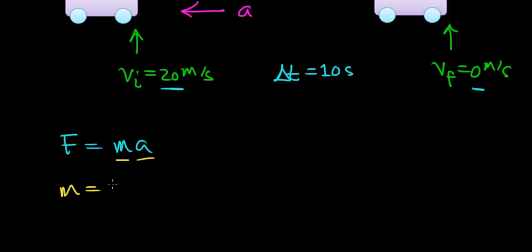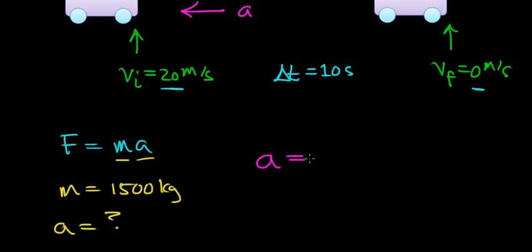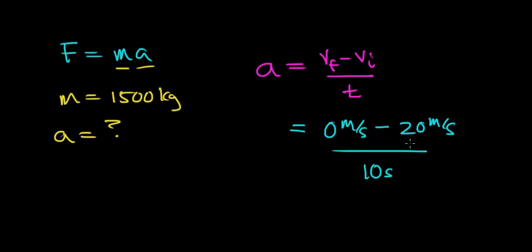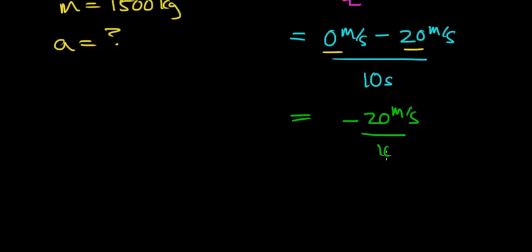The mass of the car is given as 1,500 kilograms. We don't know the acceleration directly, so we're going to use our definition of acceleration: acceleration is the change in velocity divided by the time it takes to change that velocity — the final velocity minus the initial velocity divided by the time. In this case, the final velocity is 0 meters per second minus the initial velocity of 20 meters per second, divided by 10 seconds. This simplifies to negative 20 meters per second divided by 10 seconds, which works out to be negative 2 meters per second squared.